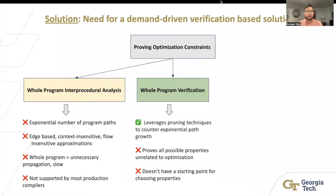How about whole program verification? Verification has been getting better, faster, and more modular due to numerous verification tool chains out there. So we could use something like counterexample refinement to actually prove many of these paths. But the issue is that when you prove these properties, they might be unrelated to the optimizations. And it's difficult to choose the starting point for these properties.